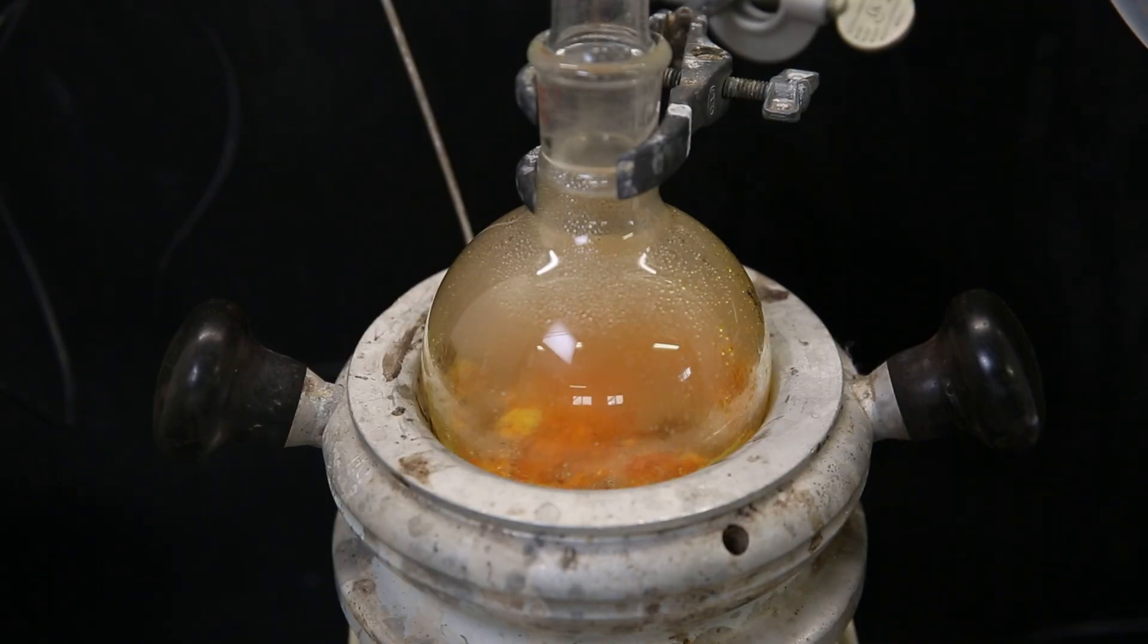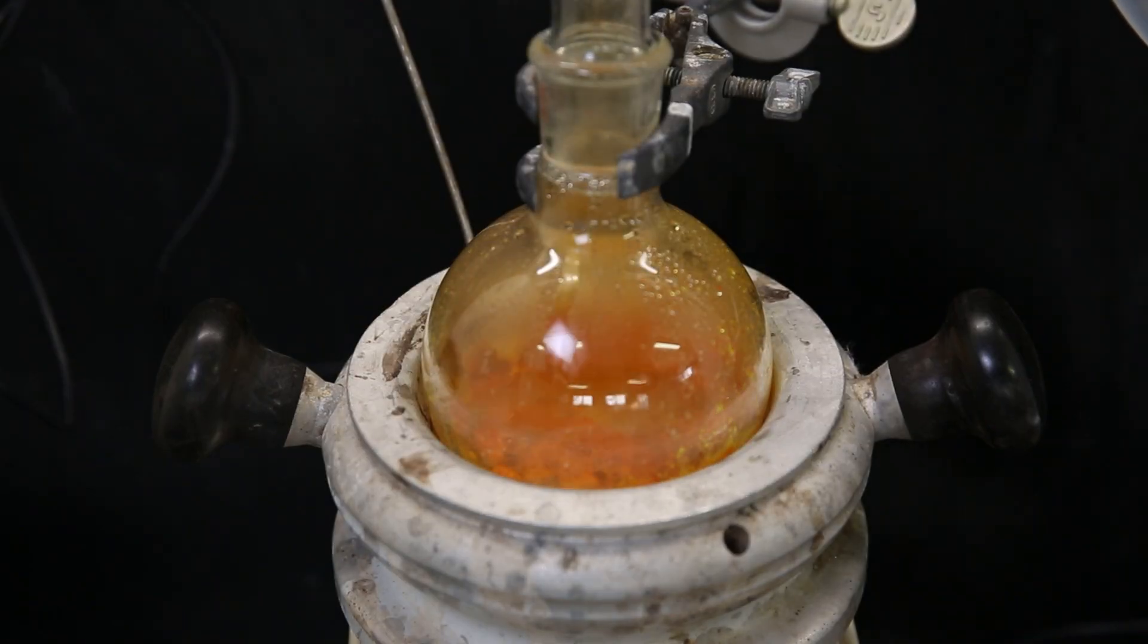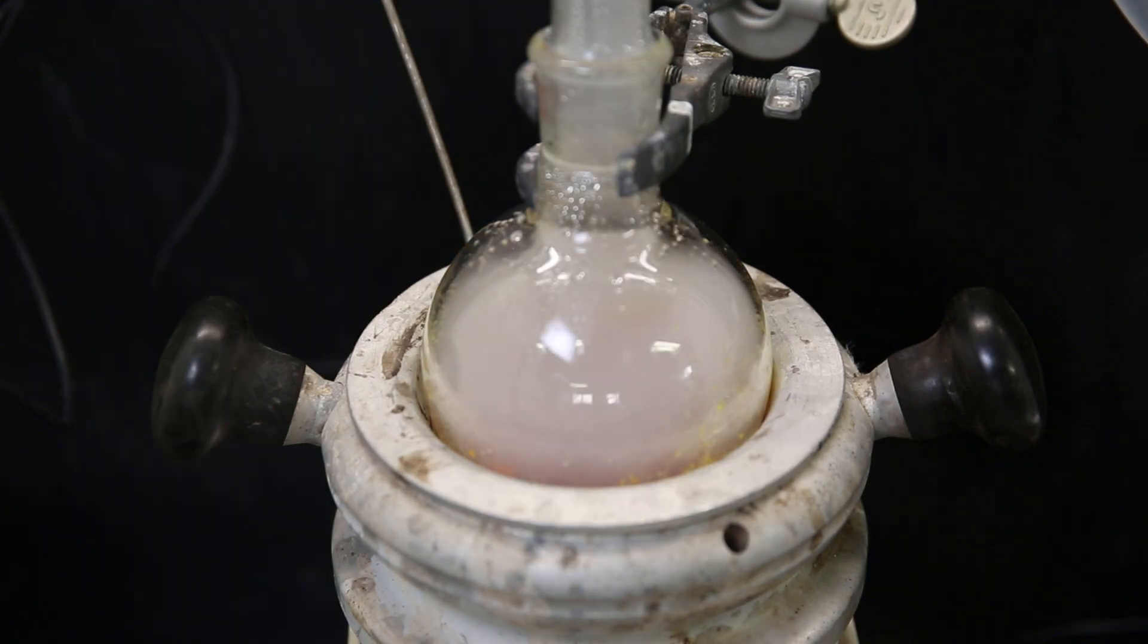Then at once a violent exotherm takes place and a lot of nitrogen dioxide is released. The mixture and solid both turn red from the nitrogen dioxide, and it slowly starts converting the solid to uranium tetrachloride with occasional exotherms and bursts of nitrogen dioxide. At one point the flask fills completely with white vapors.